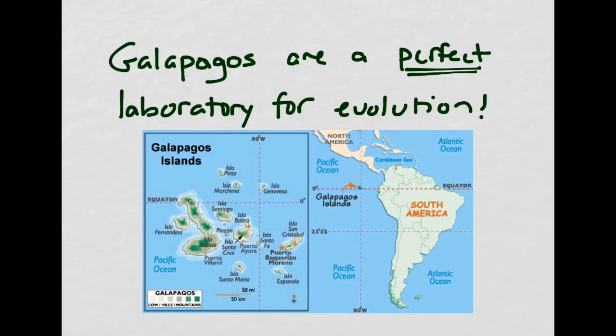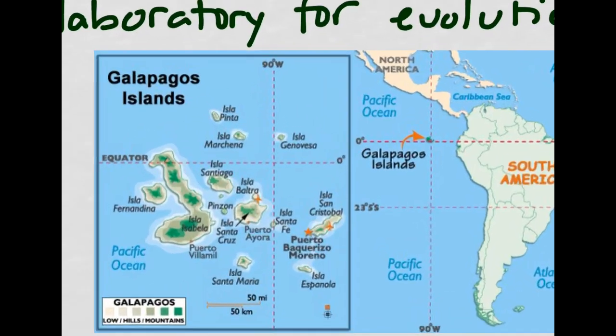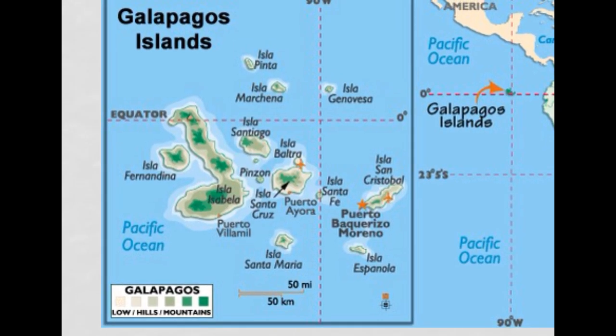For those of you who are not necessarily familiar with where the Galapagos are, they're a couple hundred miles off the coast of Ecuador in South America, and they're actually a perfect laboratory for studying evolution. Looking at this map of the Galapagos, there are many different islands, and none of them are actually inhabited by humans — there is a military base on one, but aside from that they are all protected lands.